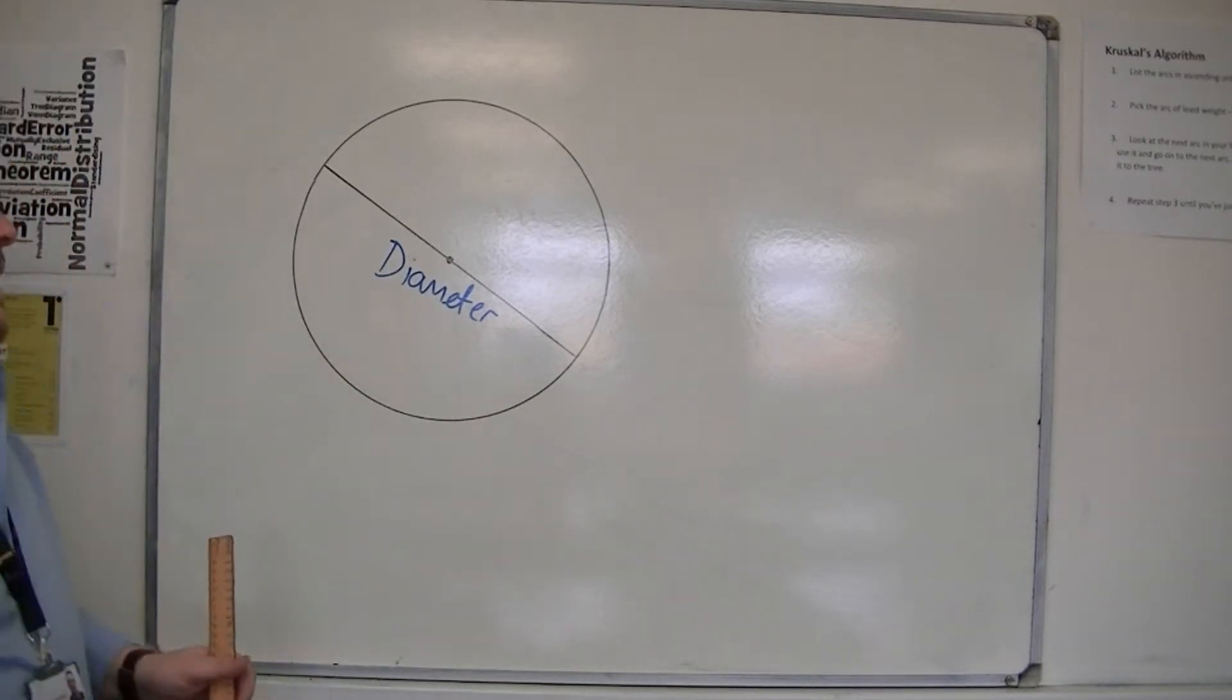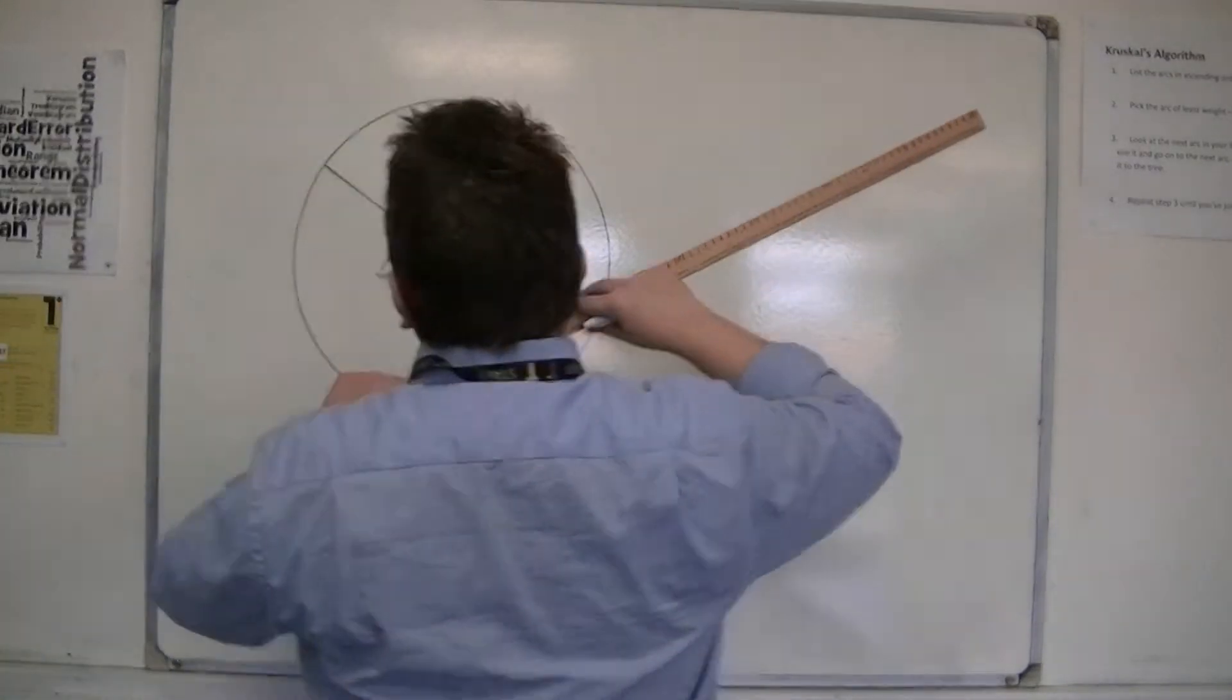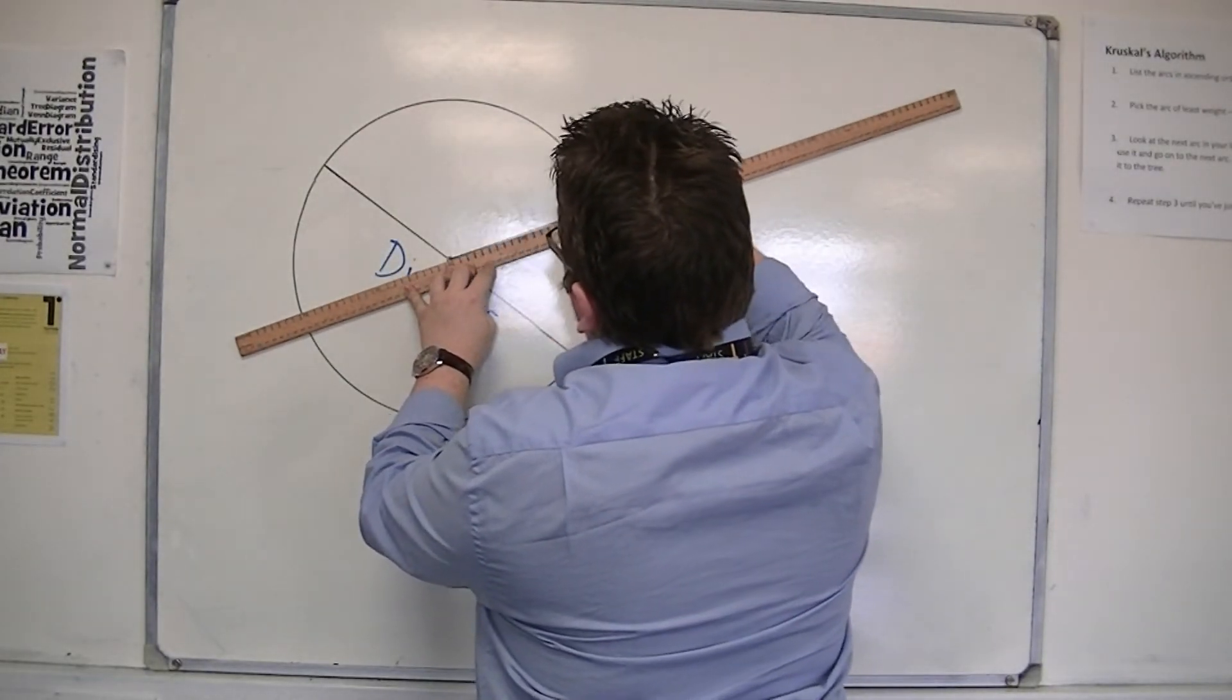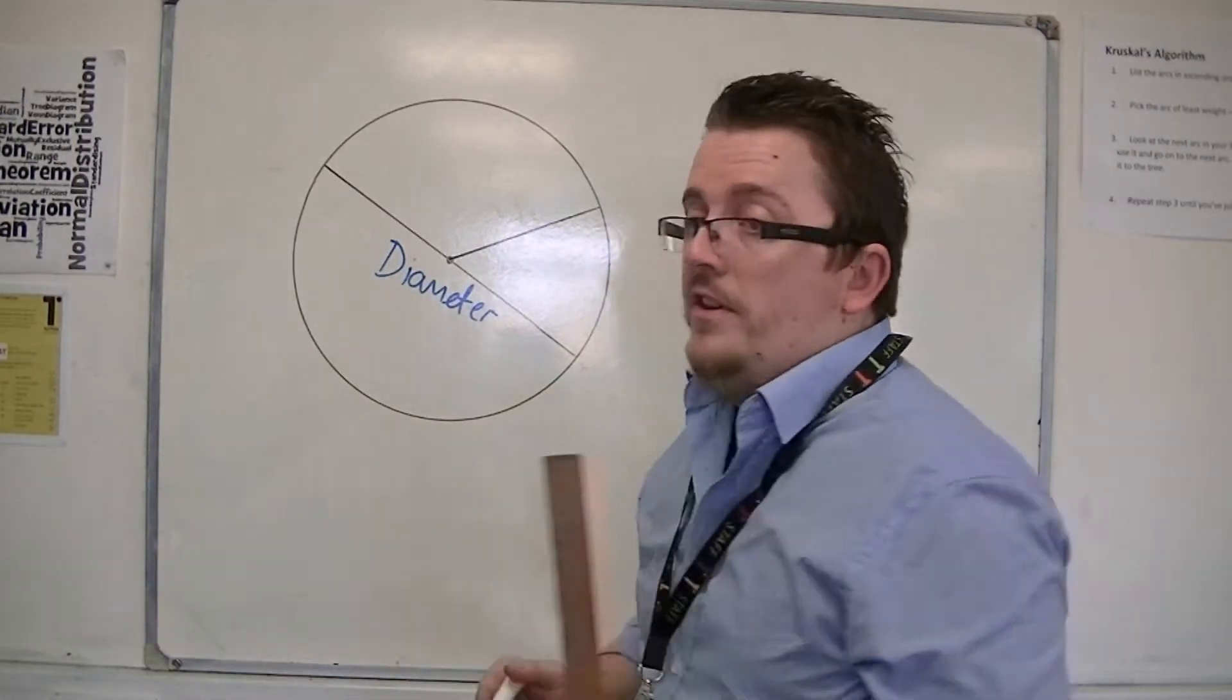Now halfway of that, so if I draw a line from the centre to the outside and I don't go all the way through, so half of the diameter is known as the radius.